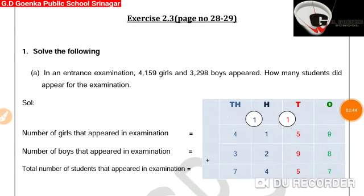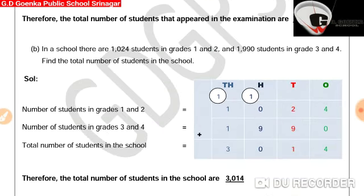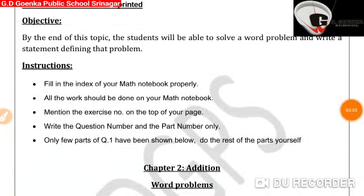Now, consider exercise 2.3 given on page number 20 of the math side book. It also contains word problems and we can solve these word problems using the same concept. A part and B part have been shown on your assignments. Please do C and D part of question number one yourself. Please don't forget that all the work should be done on your maths notebook and please mention the exercise number on the top of your page and write the question number and the part number only.